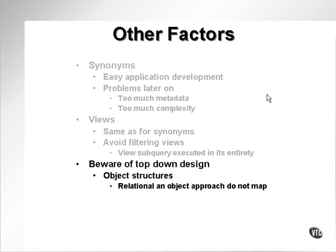Top-down design is quite common when using object structures and attempting to overlay an object structure on top of a relational database. The two don't quite match, and you end up with a mish-mash of structures and often potential problems. You cannot create an object database in a relational database and expect it to behave like an object structure — it will not be efficient. However, there are many things you can do to alleviate the issues between the two.